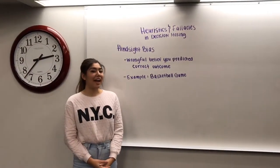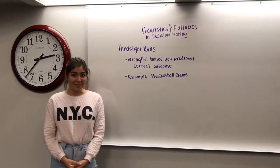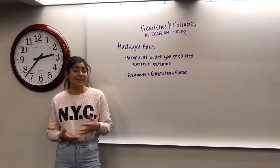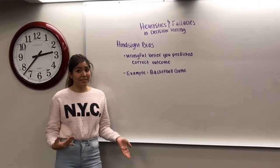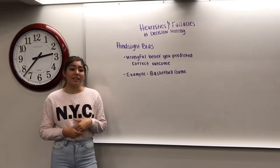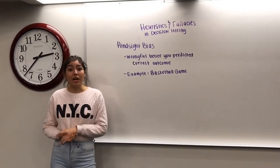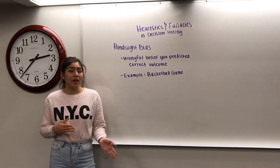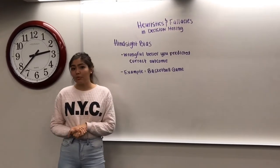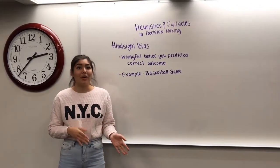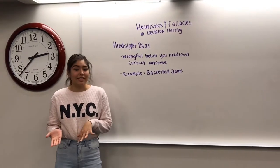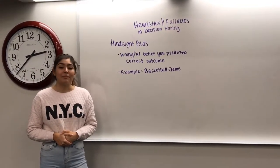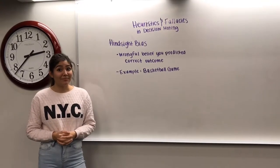Another bias that we have is called hindsight bias. This is the belief that you could have predicted the outcome of some past event. A good example of this would be a basketball game that you and your friend both watched. You could be discussing the game, and your friend could say, 'That was such a close game. I was afraid that we weren't going to win.' But then you, after already seeing the game, would say, 'No, I knew they were going to win this whole time.' But in reality, you did not know that.